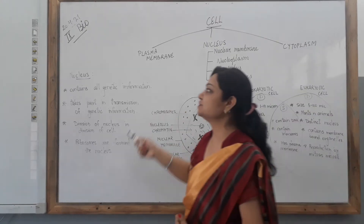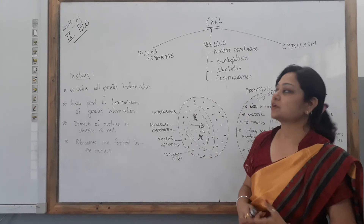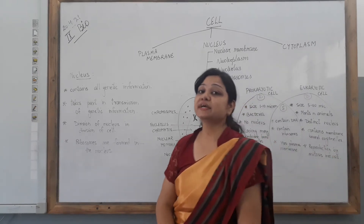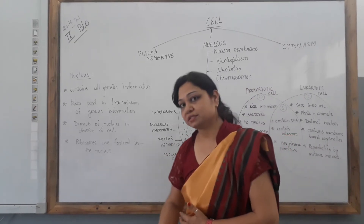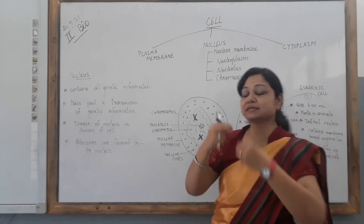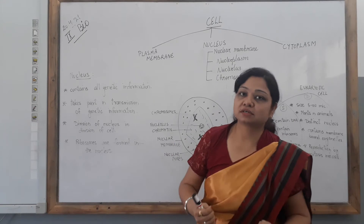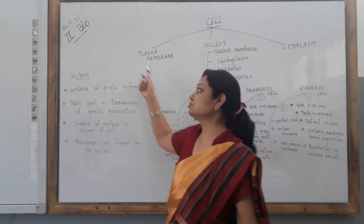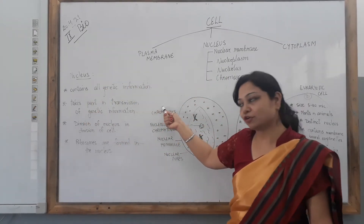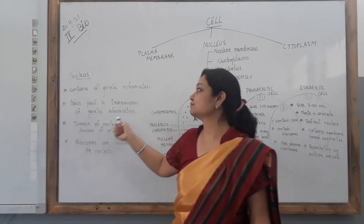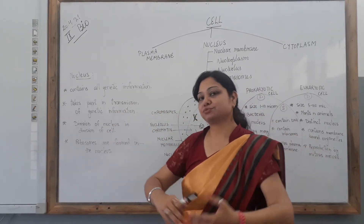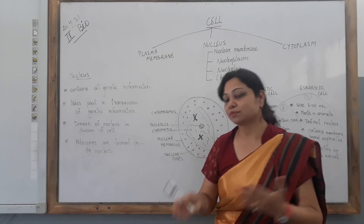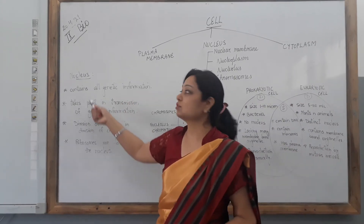The nucleus contains all the genetic information — the characteristics you are carrying from your ancestors: the genes, the inheritance, like brown eyes, brown hair, or any other feature like height. These are all carried within the genes. The nucleus carries all this genetic information and takes part in transmission of genetic information from the parent cell to the daughter cell. The characteristics we pass to the next generation are transmitted through the nucleus.